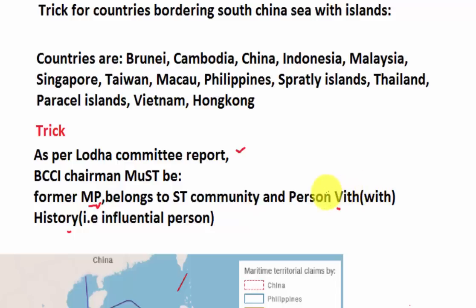From Person: P stands for Paracel Islands, V for Vietnam. And from History: H stands for Hong Kong.